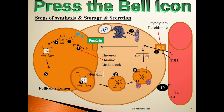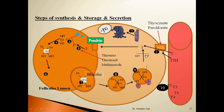In patients with congenital absence of iodotyrosine deiodinase, MIT and DIT get excreted into the urine and symptoms of iodine deficiency appear. So these were the steps in the synthesis of thyroid hormone.